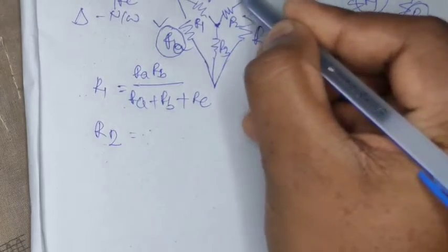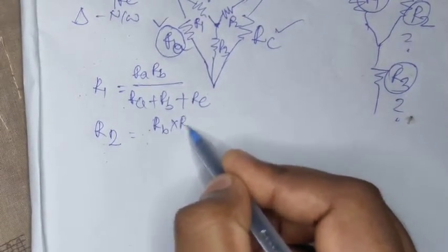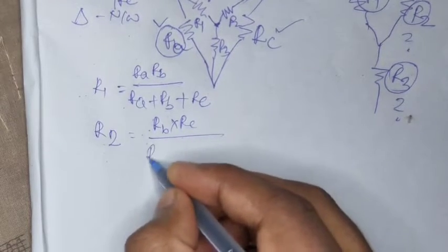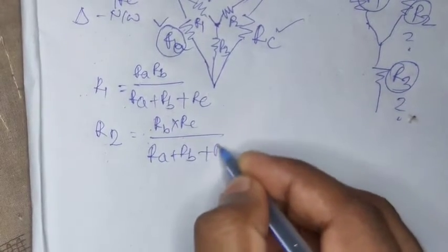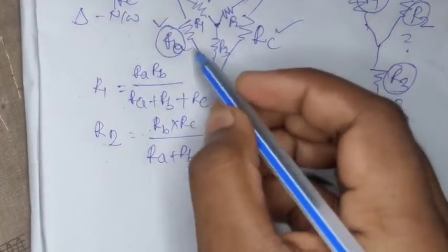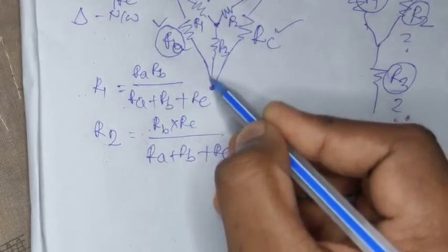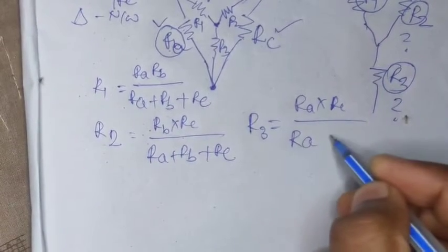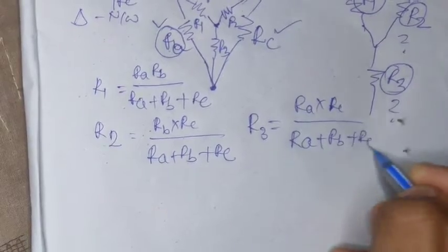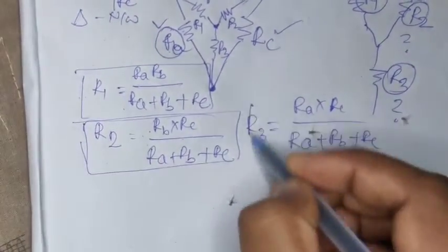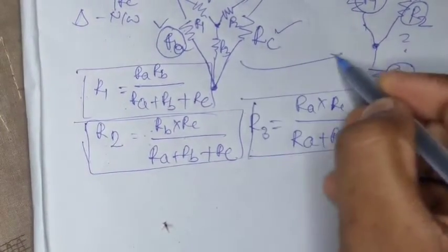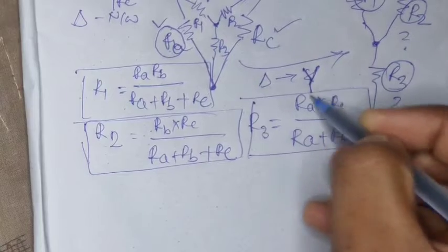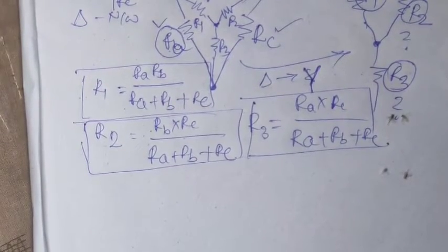For R2, multiply the resistances connected at the R2 node, which are Rb and Rc, so Rb into Rc, divided by the sum of all resistances in the delta network: Ra plus Rb plus Rc. Similarly, for R3, multiply the resistances connected at the R3 node — Ra into Rc — divided by the total resistance Ra plus Rb plus Rc. This is the formula for delta to star conversion.